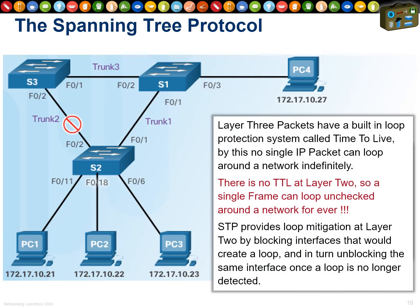Spanning Tree is a wonderful layer two loop mitigation protocol. At layer three, there's TTL tracking how many routers a packet has traversed, but there's no loop mitigation at layer two at all — so one tiny broadcast can completely cripple your entire network. Spanning Tree was invented to solve this: switches talk to each other about their connections, elect a boss, track all interfaces, and detect when a loop is forming.